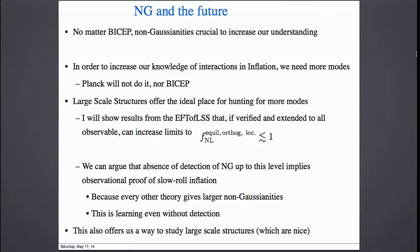No matter what BICEP will conclude, non-Gaussianity seems crucial to increase our understanding of inflation. If the result goes away, we are back to start. If it stays, we will know something plays a role, but we don't really know what — there are all these other operators that could be present. To understand the dynamics of the inflaton field, there is only one way: non-Gaussianity. All the rest is free dynamics, and free dynamics is not that interesting. In order to increase our knowledge of inflation, we need more non-Gaussianity, and therefore we need more modes. Planck will not do it, nor of course will BICEP.